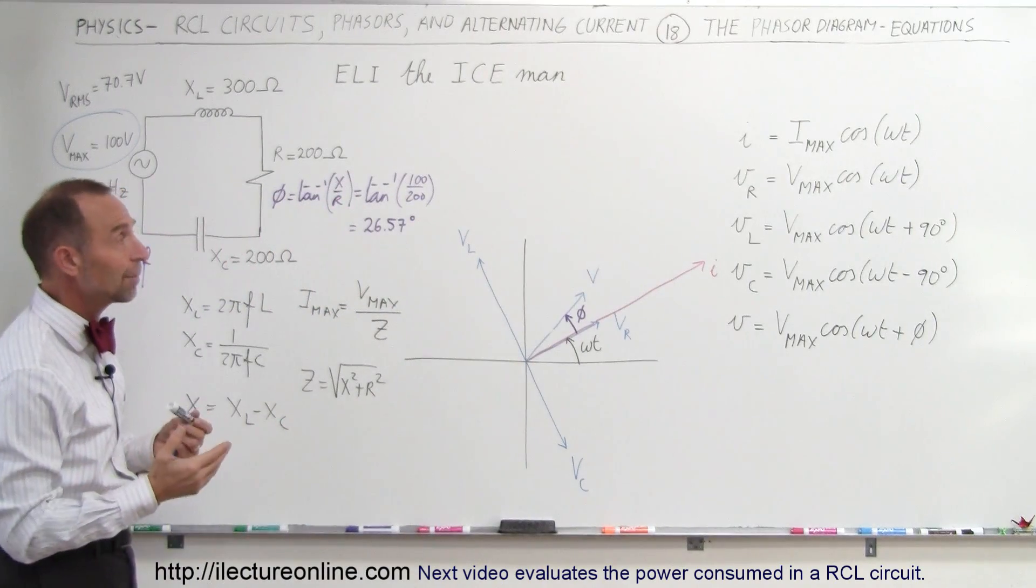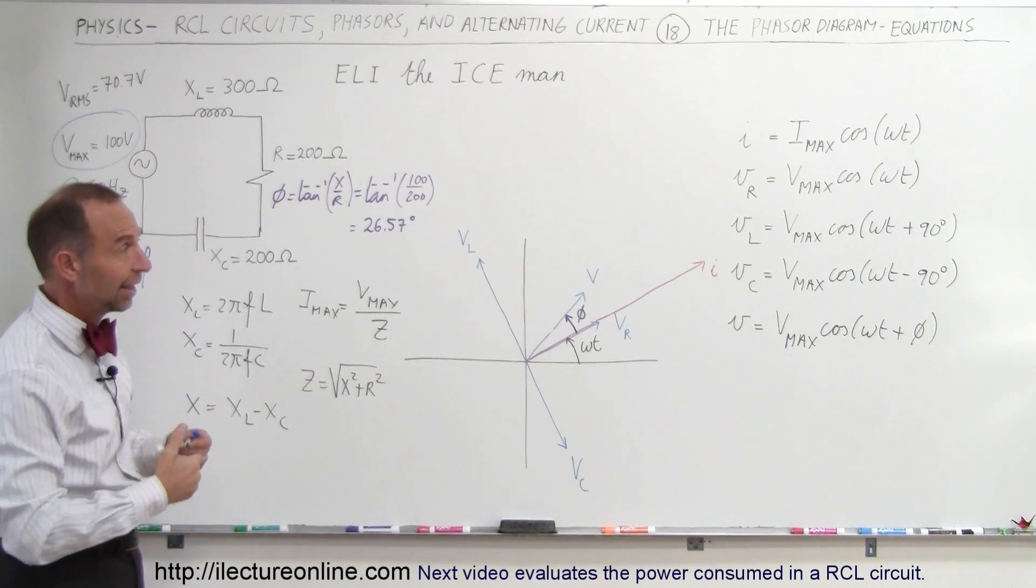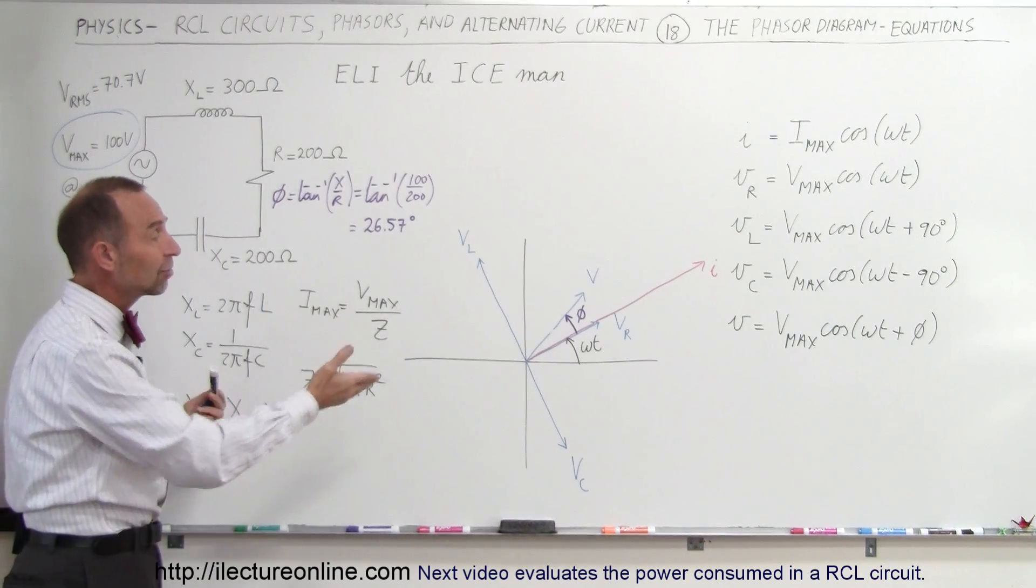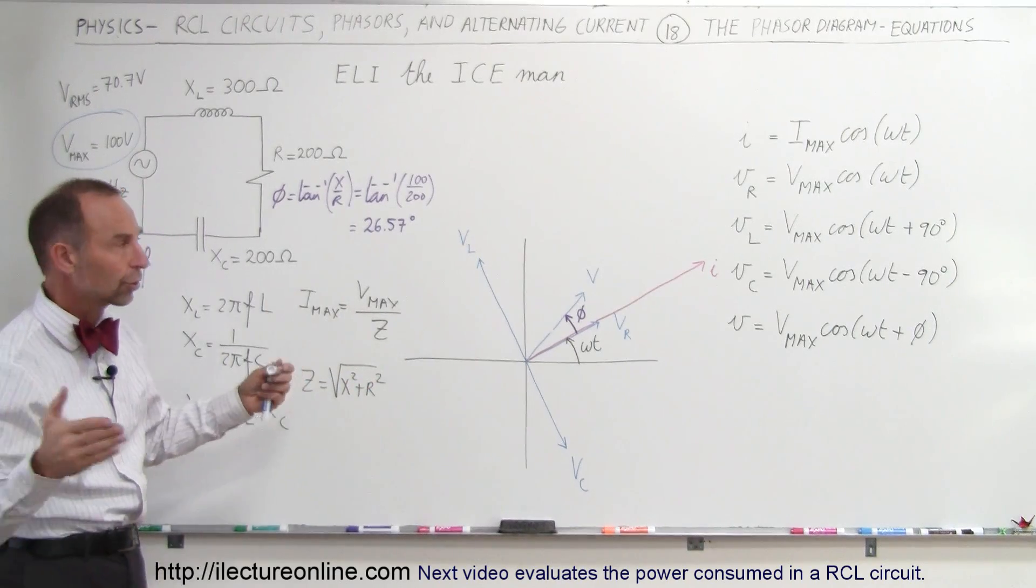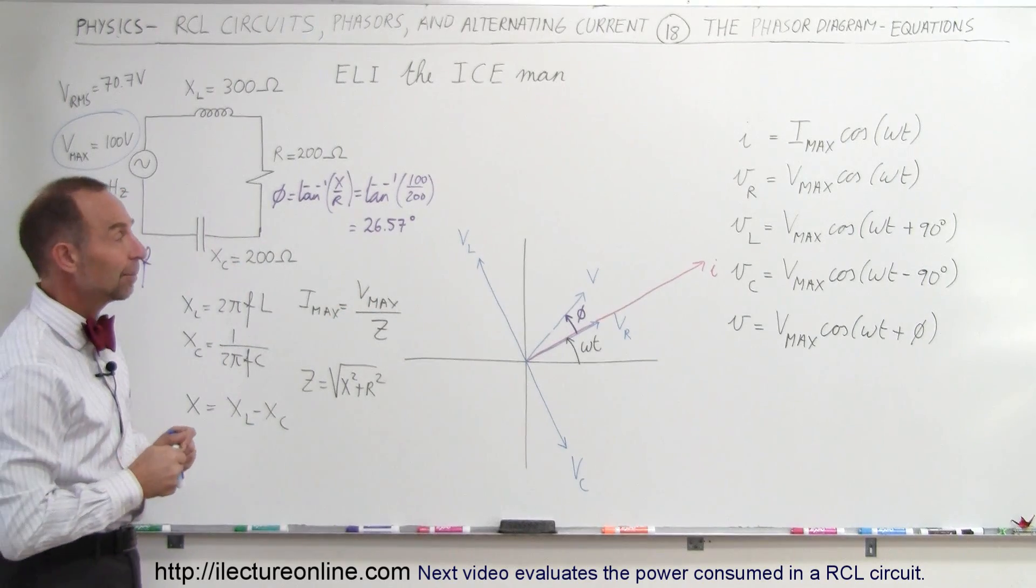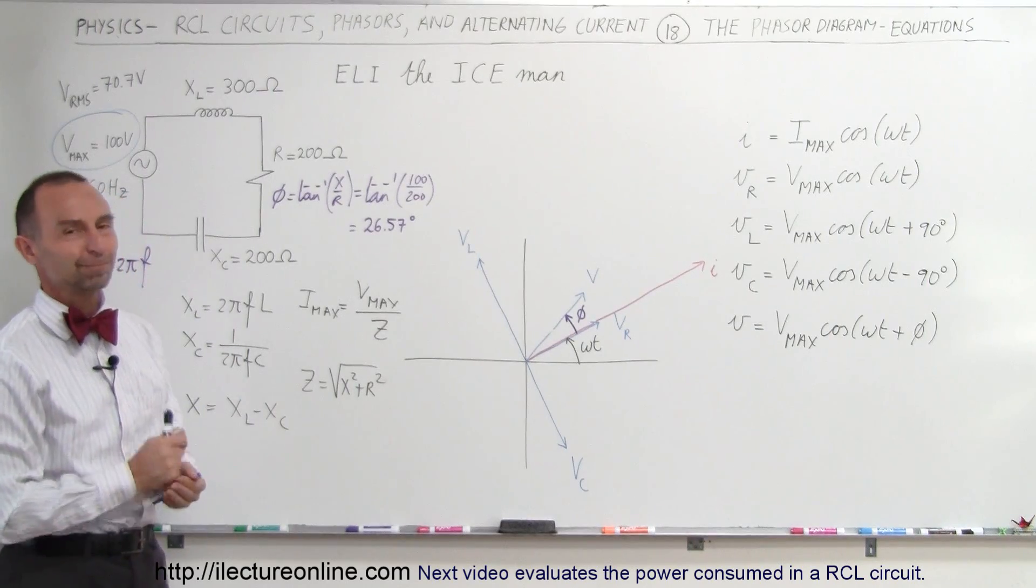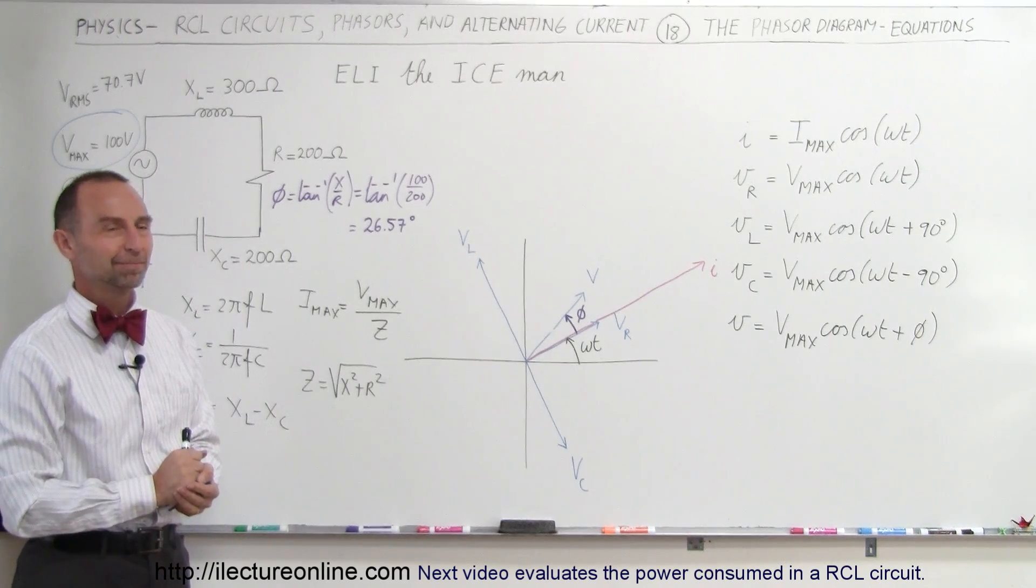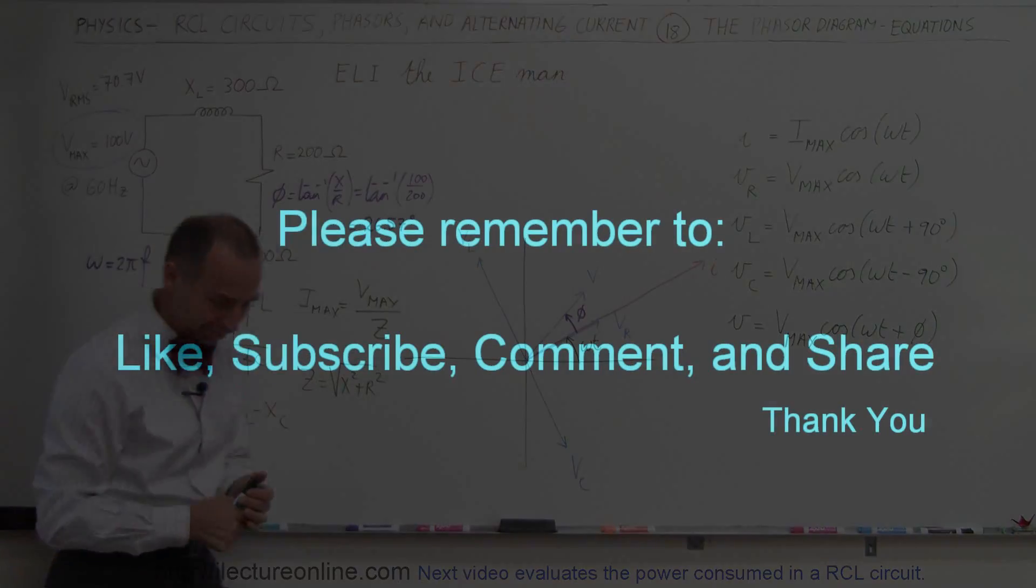So those are the equations describing the current in the circuit and the voltages across each component, as well as the voltage of the whole circuit as a function of time, and that's how we calculate their independent voltages at any moment in time in the circuit. That's how we do that. Thank you.